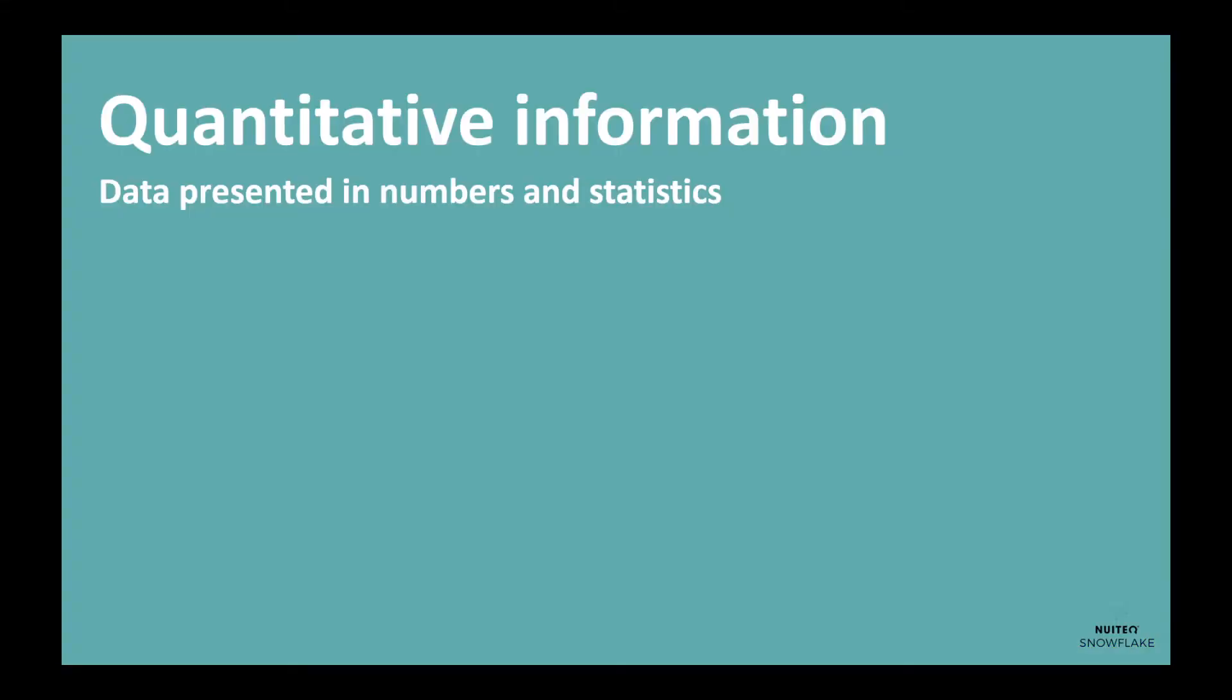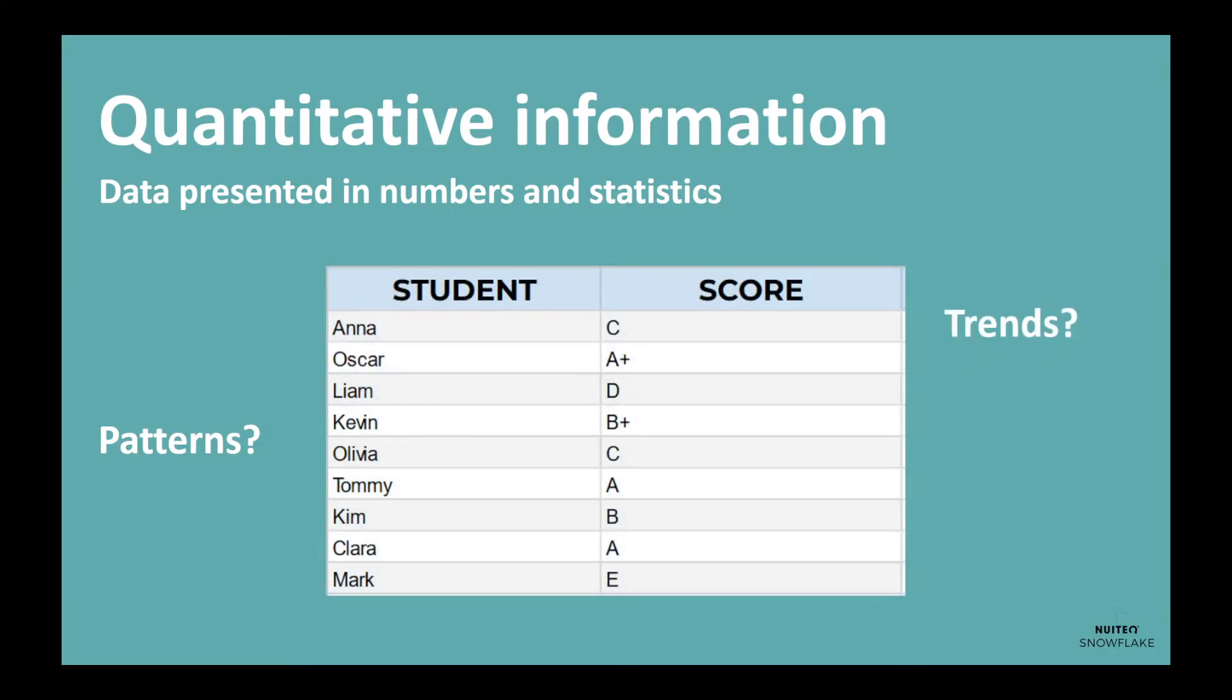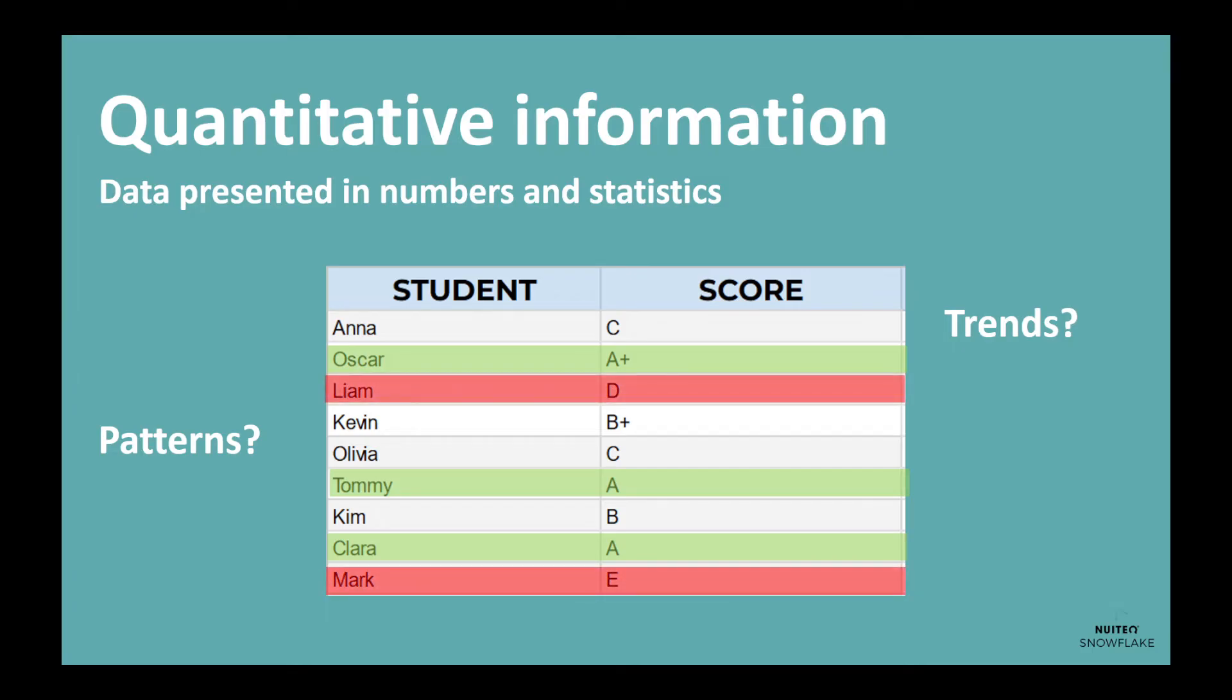Next up is quantitative information, which is data presented in numbers and statistics. This type of information can be overwhelming, but it's important to take the time to understand it. One way to do this is by looking for patterns and trends in the data. For example, if we're looking at a table of test scores, we can see which students did well and which ones struggled. We can also calculate averages and percentages to get a better sense of how the group as a whole performed.